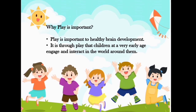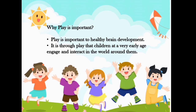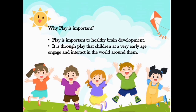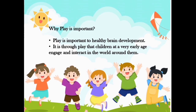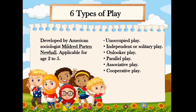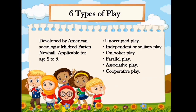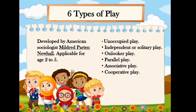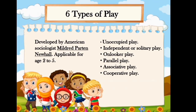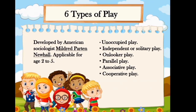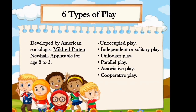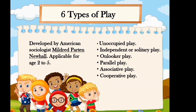We can observe the types of play based on their ages while they are playing, whether alone or together. The types of play are: unoccupied play, independent or solitary play, onlooker play, parallel play, associative play, and cooperative play. These types of play are applicable for ages 2 to 5, and the observations are done on early childhood.